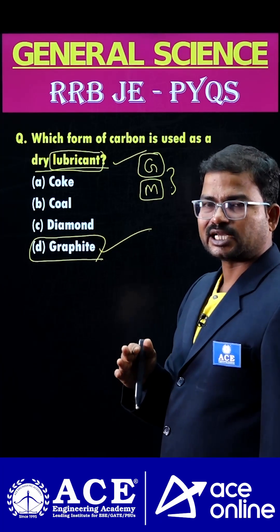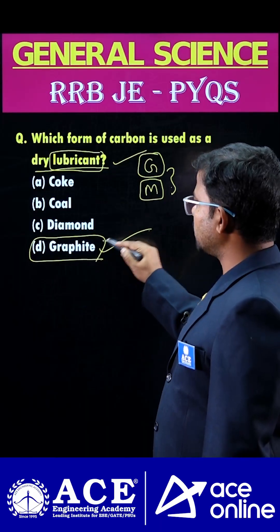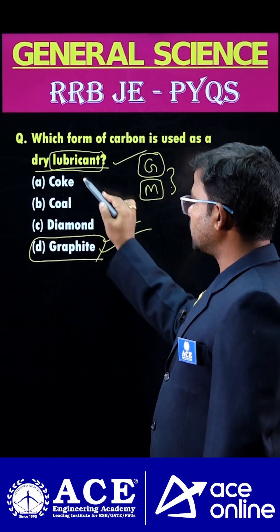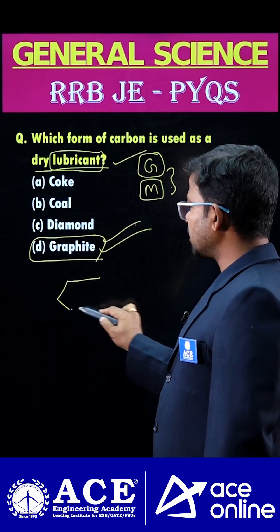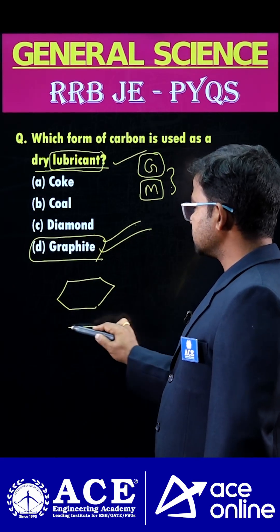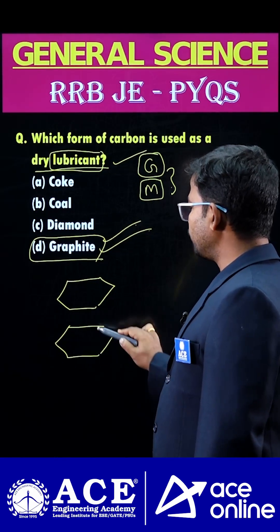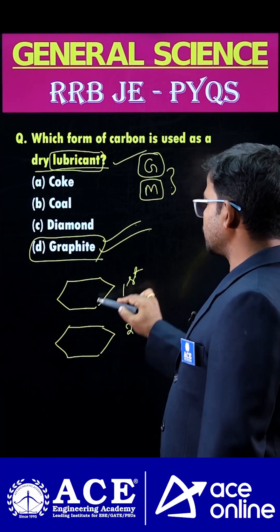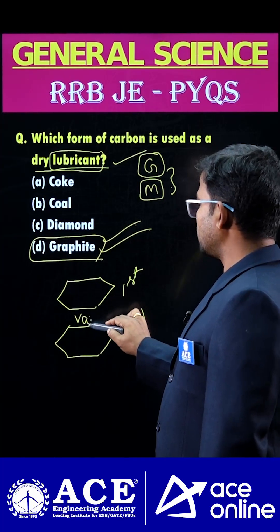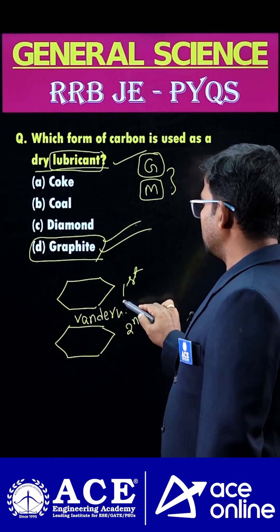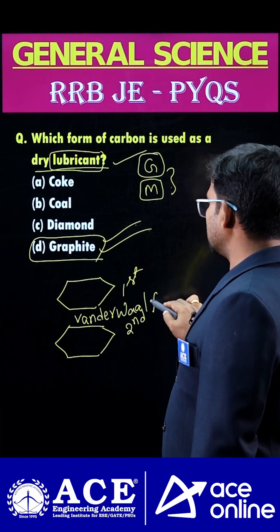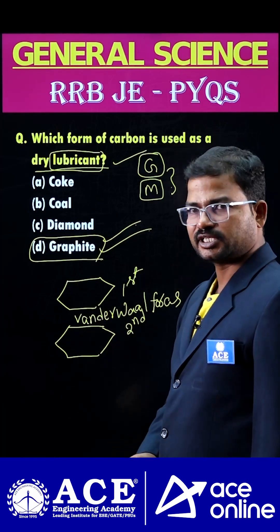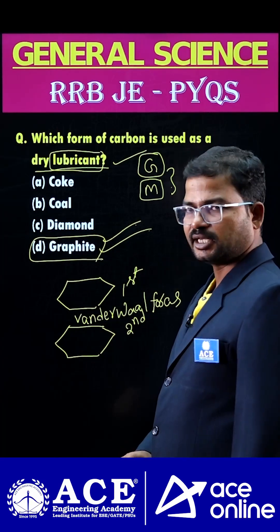To overcome these issues, we use an alternative which is graphite — considered the best dry lubricant. Graphite has Van der Waals forces between any two layers of its constituents. Van der Waals forces are the weakest forces, and due to their existence, graphite is treated as a dry lubricant.